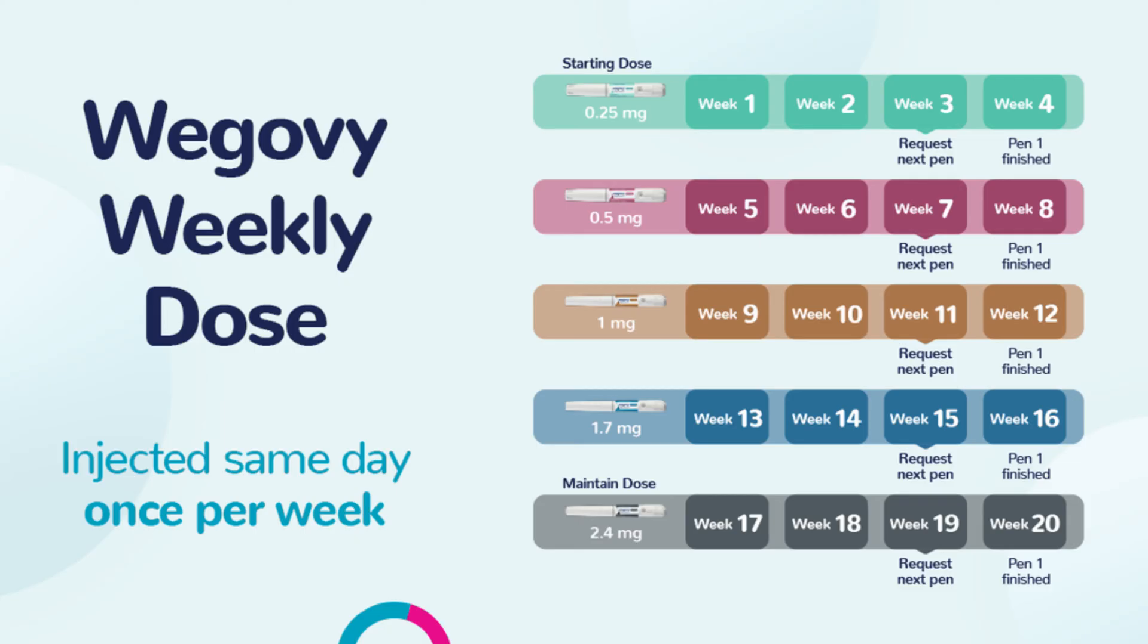Use the same pen for all four weekly injections, but you must change the needle each time. Start Wegovy with a dose of 0.25 milligrams once per week in your first month. You stay on each dose for at least four weeks. Each dose has its own color so you can make sure you're using the correct dose each week.